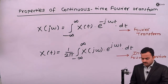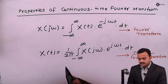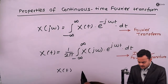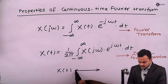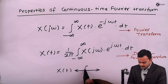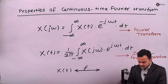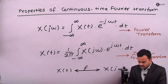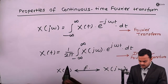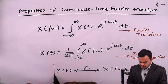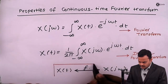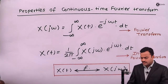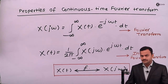We can represent this relationship as: x(t), if you do a Fourier transform, will give X(jω). So while analyzing any property of a Fourier transform, this will be the first statement.